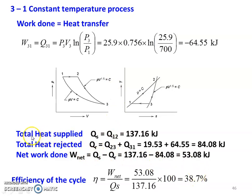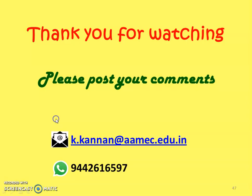So, heat supplied is 137.16 kJ, heat rejected is 84.08 kJ, and the efficiency of the cycle is 38.7%. We stop here. Thank you for watching. If you have any doubts, I will answer your questions. We will meet again in another video lecture on problems in thermodynamic processes.